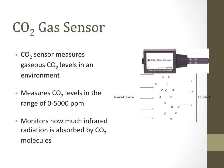Carbon dioxide gas sensors measure gaseous CO₂ levels in the environment. In cities, CO₂ levels are displayed on LED boards showing current pollution levels. The sensor uses an infrared source and an IR detector to detect how much CO₂ is present, measuring carbon dioxide levels in the range of 0 to 5000 ppm and monitoring how much infrared radiation is absorbed by the CO₂ molecule. This equipment is widely used in urban areas.